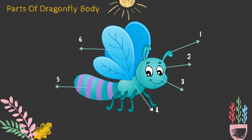So today we are going to learn parts of dragonfly body. The first one is antenna. Number two, eye. Number three, head. Number four, thorax. Number five, abdomen. Number six, wings.